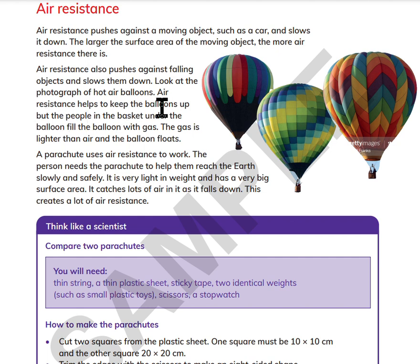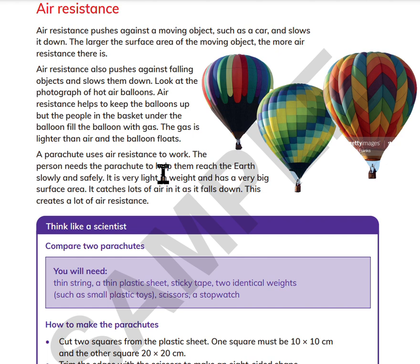The people in the basket under the balloon fill the balloon with gas. The gas is lighter than air and the balloon can float. A parachute uses air resistance to work. The person using a parachute can reach the ground slowly and safely. It is very light and has a very big surface area. It catches lots of air as it falls down, which creates a lot of air resistance.